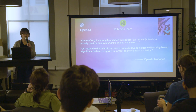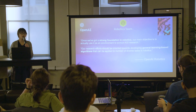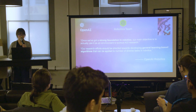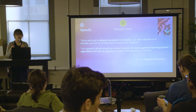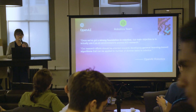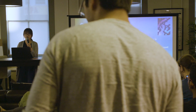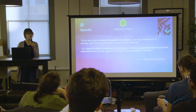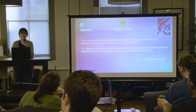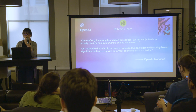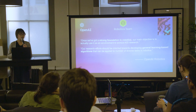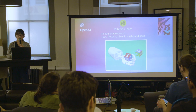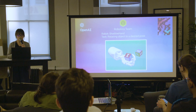The goal for the robotic team is to build a very strong robotic foundation such that we can use it to solve real AGI. We are focusing on developing general learning-based algorithms that can work on a diverse set of robotic tasks. To make sure our algorithm is general enough, we pick a pretty hard task — having a shadow hand rotate an object to a desired pose.